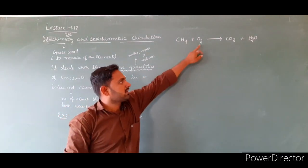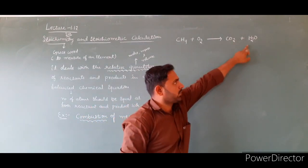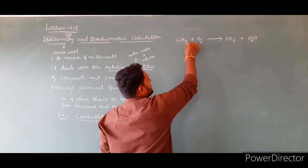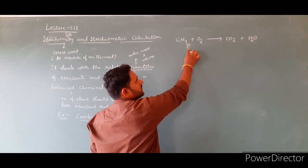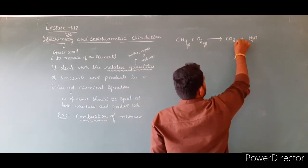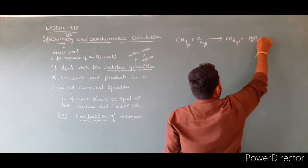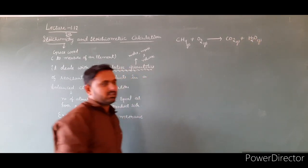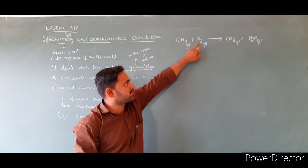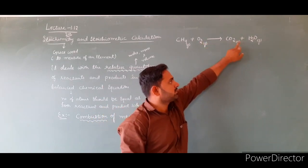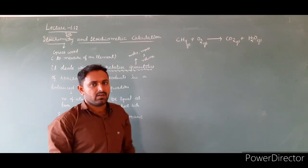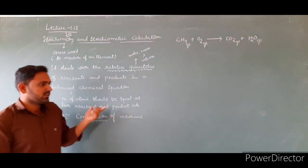The products are carbon dioxide and water, both in gaseous state. Now check whether the reaction is balanced or not. On the reactant side there is one carbon; on the product side there is also one carbon — carbon is balanced. In the reactant side there are four hydrogens; in the product side there are two hydrogens — hydrogen is not balanced. Oxygen: reactant side has two, product side has three — so the equation is not balanced.